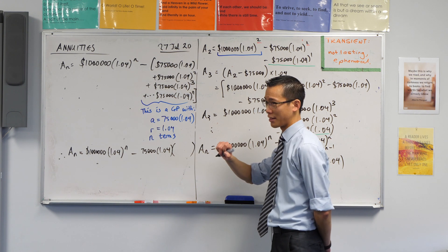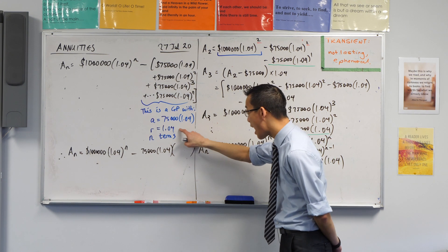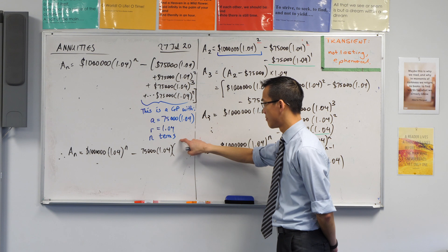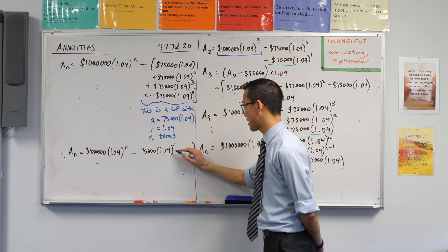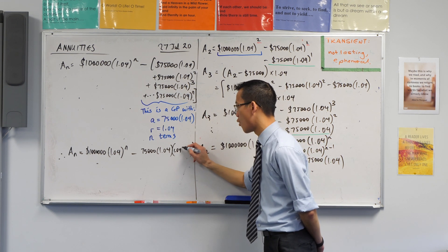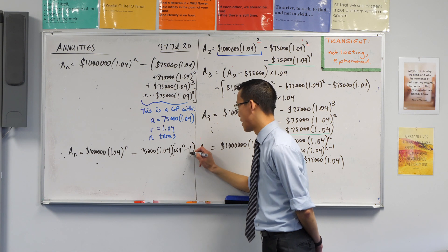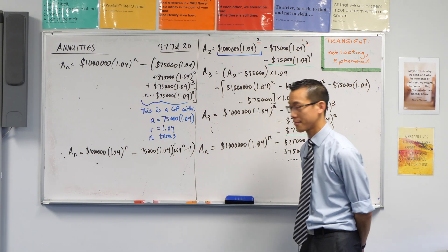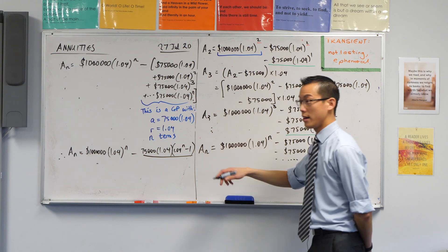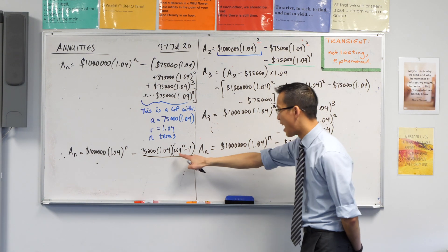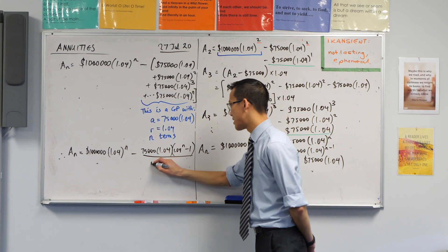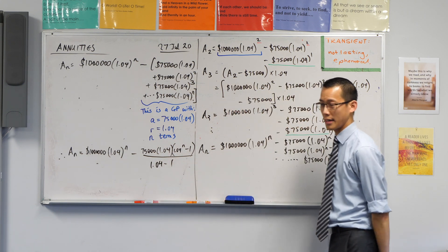Yeah, it's, hold on, hold on, careful. You've got the formula there, right? It's r to the n minus 1, right? So in this case, it's 1.04 to the n minus 1. Is that okay? And then I divide by r minus 1. There's r to the n minus 1, and then there's r minus 1 on the bottom. Okay?